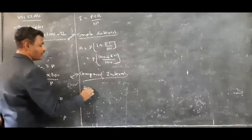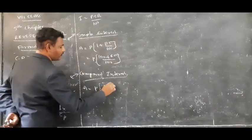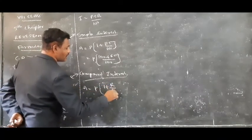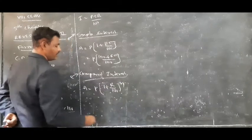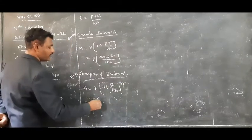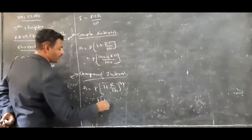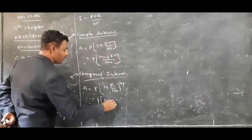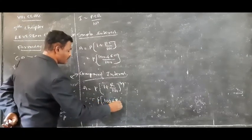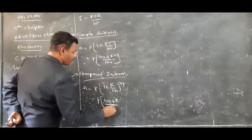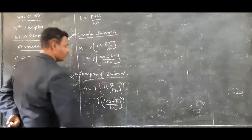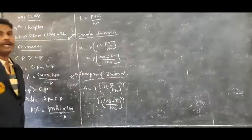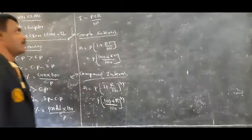A is equal to P bracket 100 plus RT by 100, whole power N. Here N is nothing but the time duration.